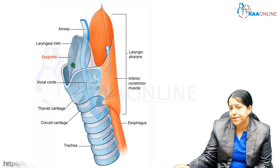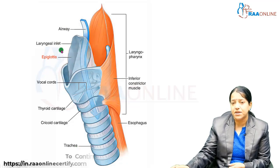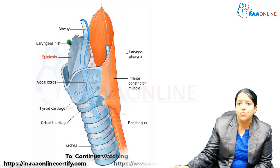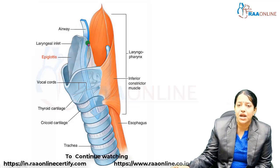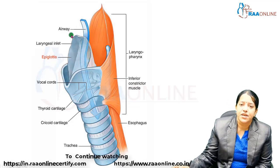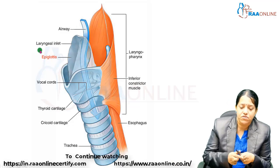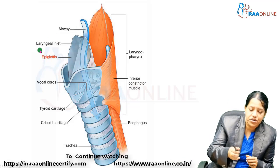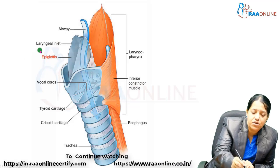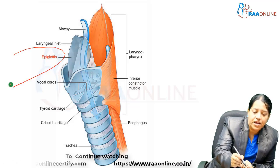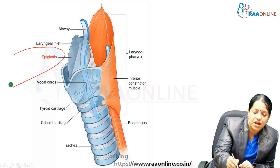Looking at this diagram, you can see a leaf-shaped cartilage — this is the epiglottis. The tongue is just anterior to this cartilage, and this is the posterior basal region.